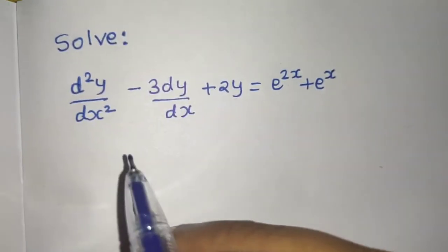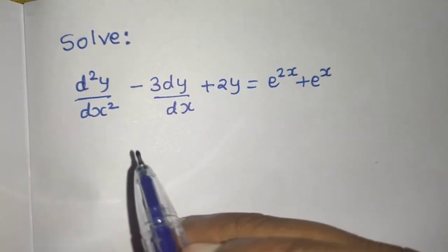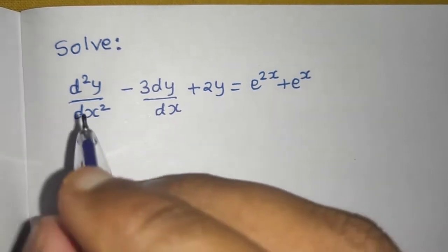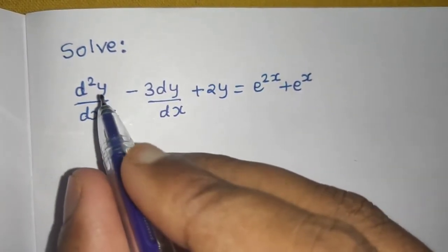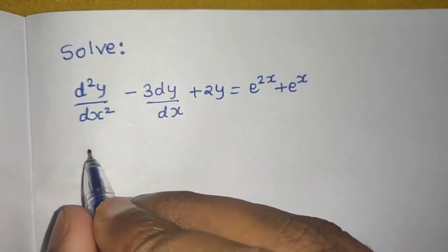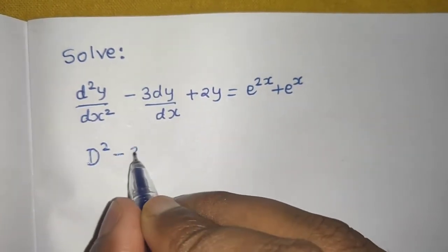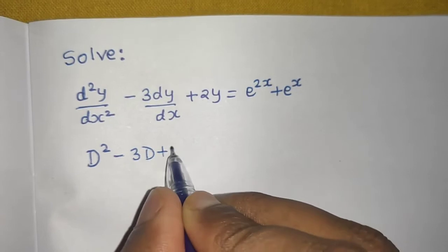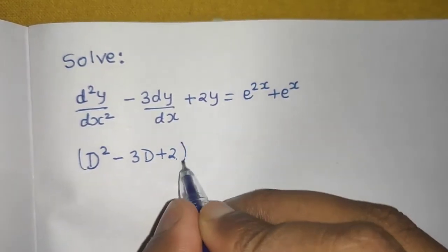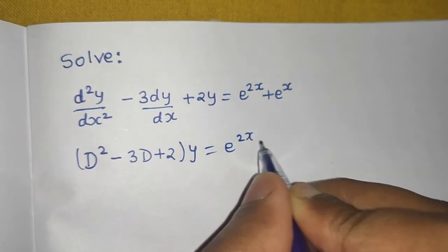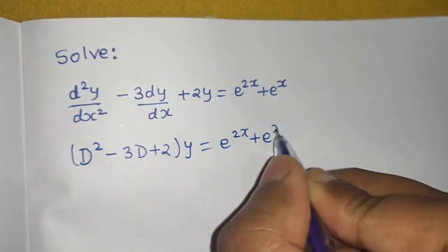So first we'll find the complementary function. For that, convert this first into D form. So we know that this can be written as D² minus 3D plus 2 operating on y equals to e power 2x plus e power x.